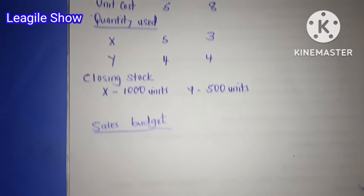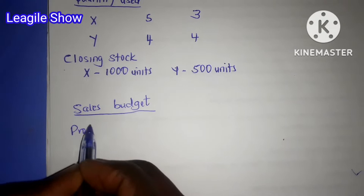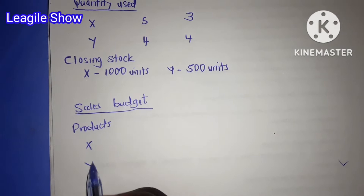How do we prepare the sales budget? Remember we are having two products. So we start from there — the two products, that is X and Y.